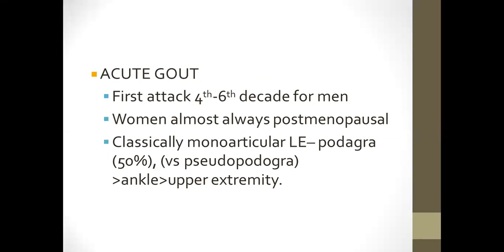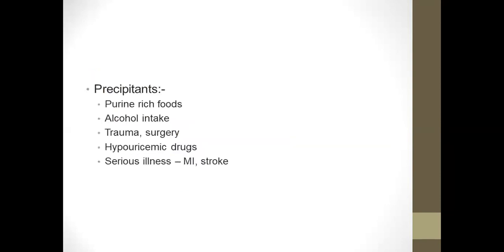This usually occurs in the four to six decades for men. In women, usually it's postmenopausal. Classically, it's a monoarticular inflammation, podagra, which is the first metatarsophalangeal joint inflammation. Usually this is affected more than ankles, and ankles are affected more than the upper extremities.